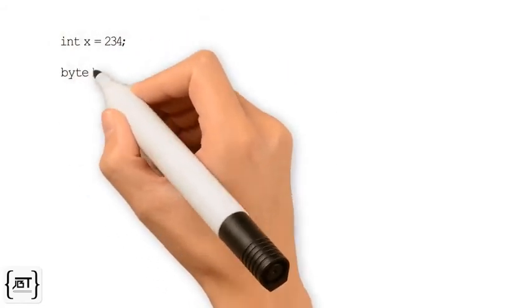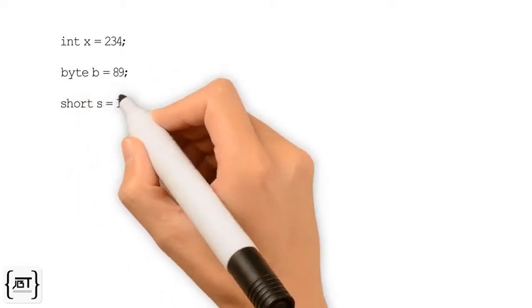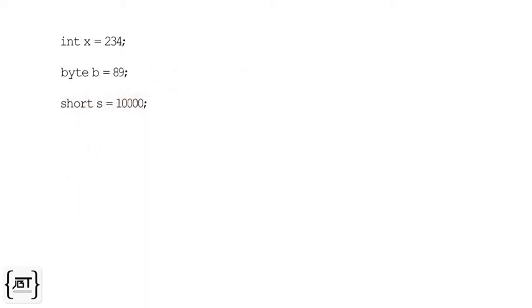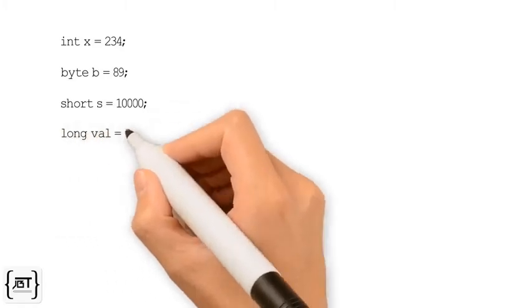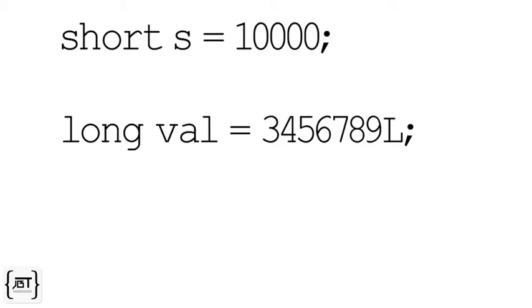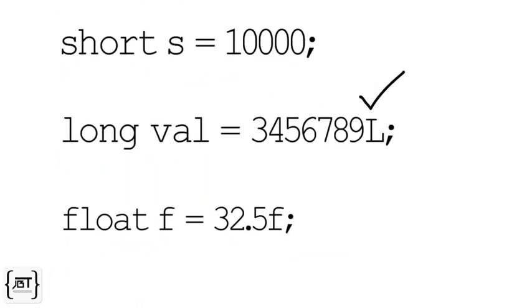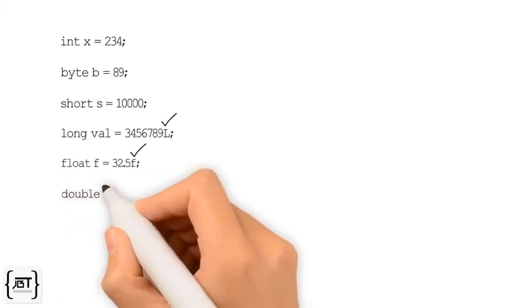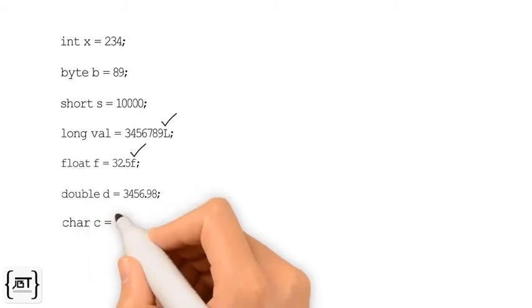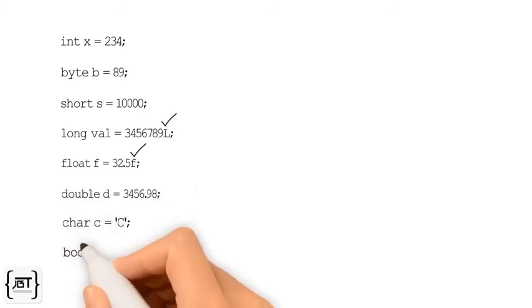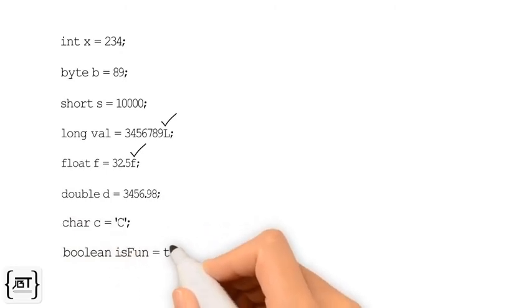Let's see some examples of primitive declarations. Here we are declaring an integer variable, a byte variable, short variable with some literal values. Let's declare a long value. Integer literal of type long should end with letter L. Otherwise, it is of type int. A declaration of float variable. A floating point literal is of type float if it ends with the letter F. Otherwise, its type is double. A double variable. Char literals are defined within single quotes. Lastly, we are declaring a Boolean variable with value of true.